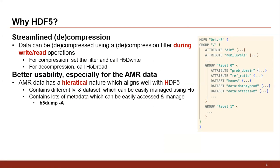The AMR data has a hierarchical nature — we will have different levels or different resolutions that perfectly align with HDF5. The AMR data will also contain a lot of metadata, such as the refinement ratio of each level, the domain size, and the box positions of the data. With HDF5 we can easily manage and access this metadata.